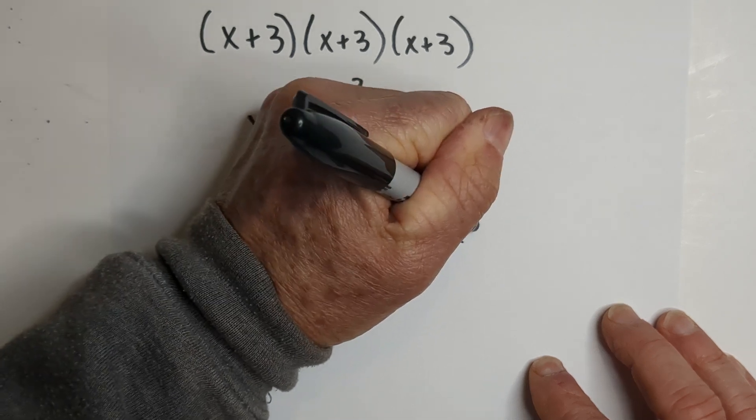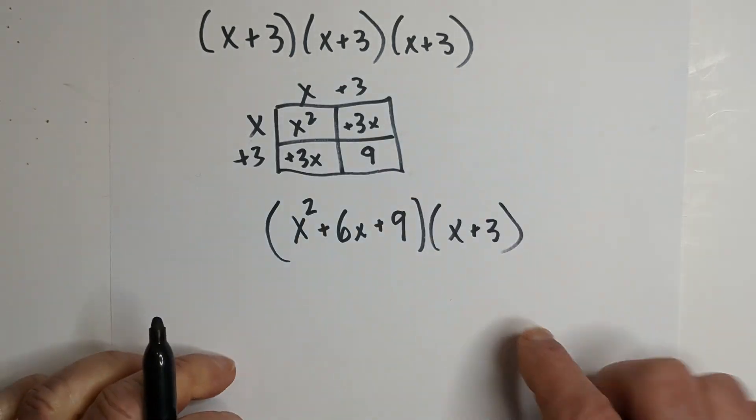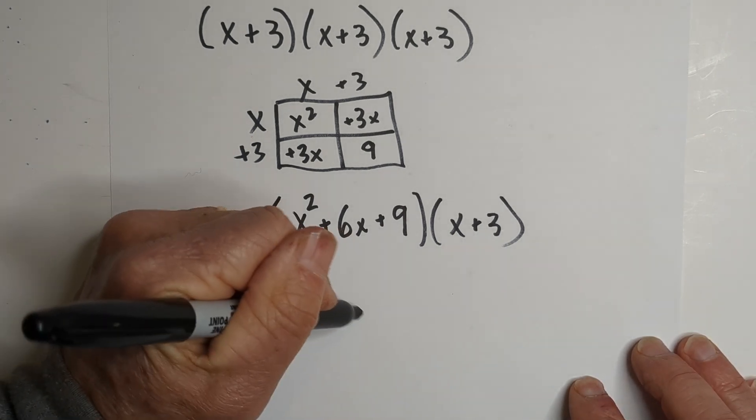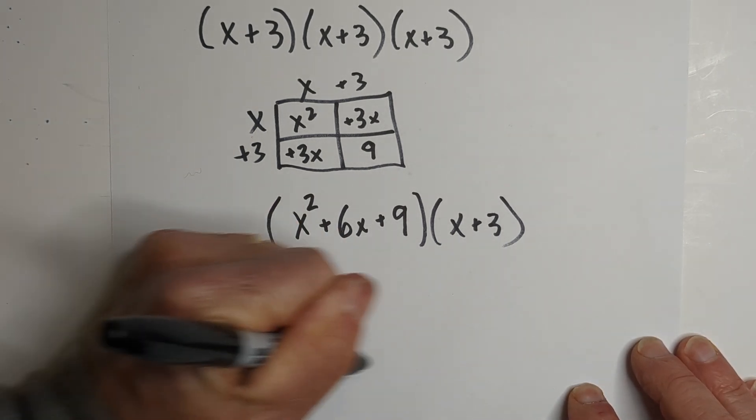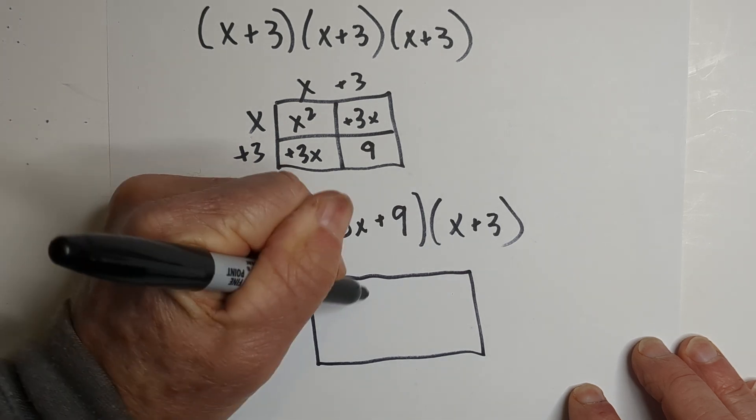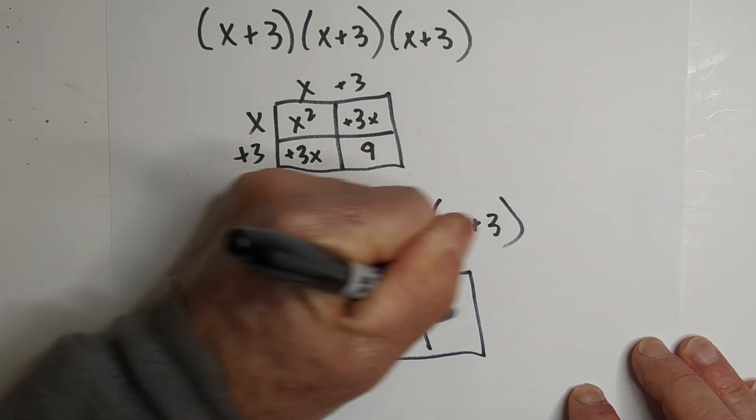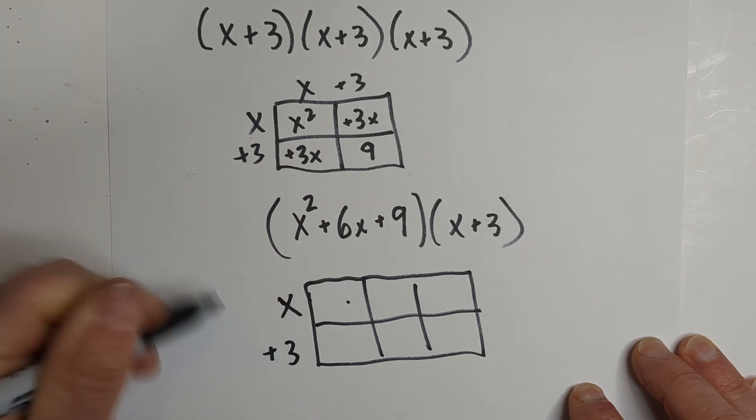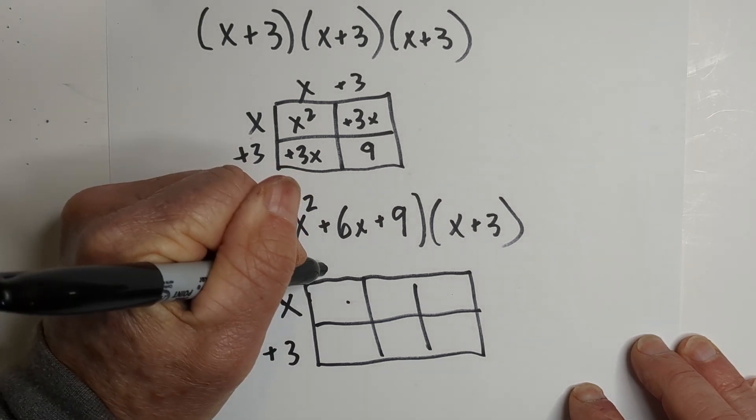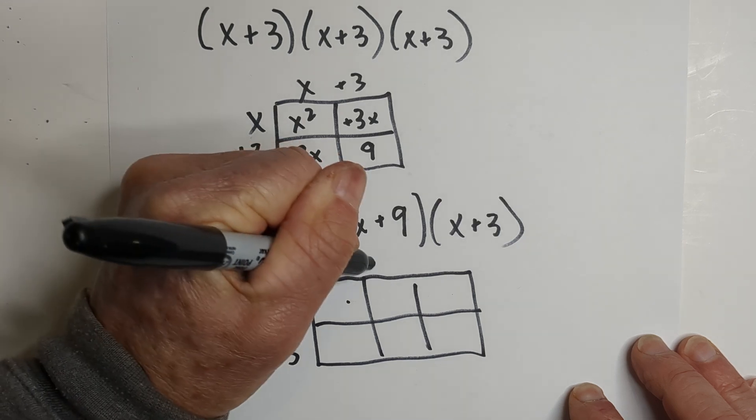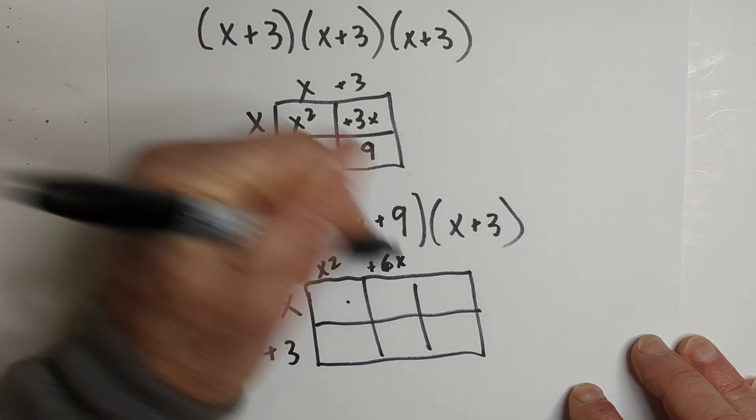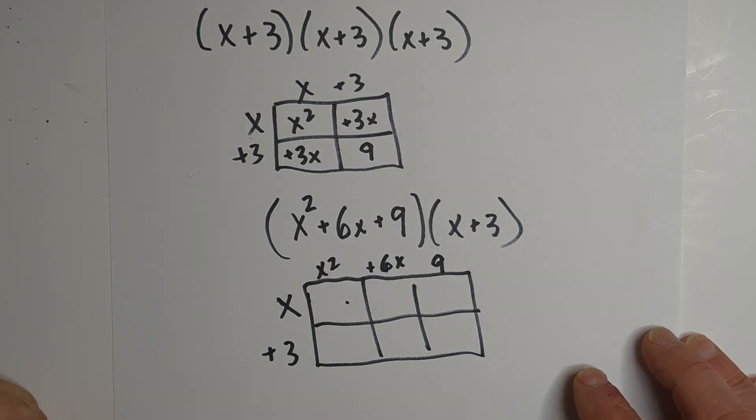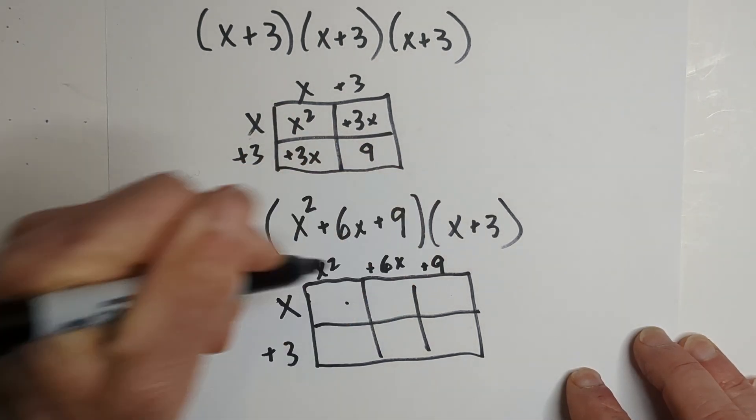Phase 2 is basically multiplying (x + 3) times this. So we're going to draw another box, except this time it's going to have 3 boxes here. We're going to do the same thing: x plus 3, and then x squared plus 6x and then a 9. So here's what we have, and this would be a positive 9.